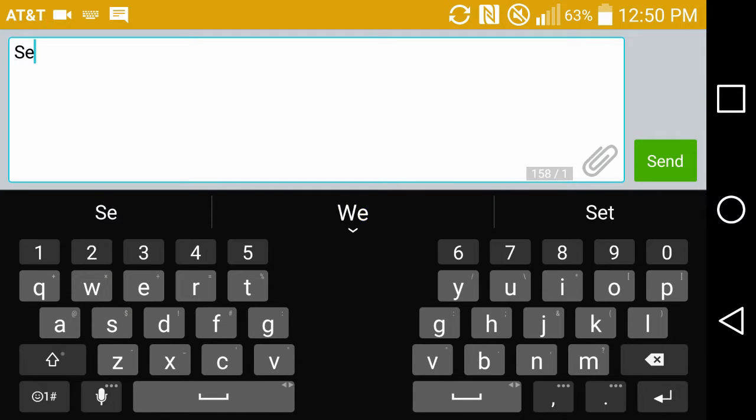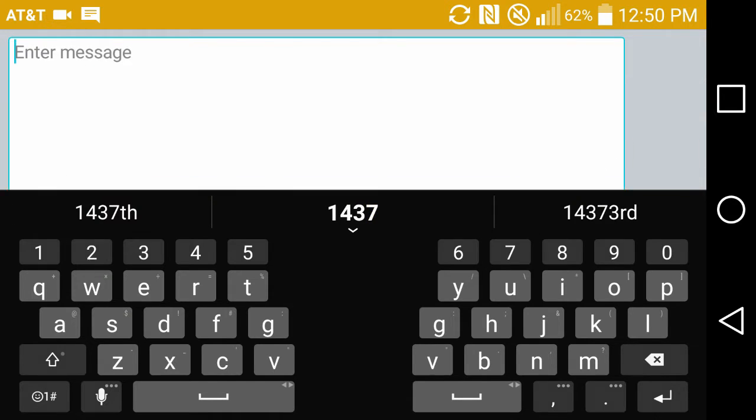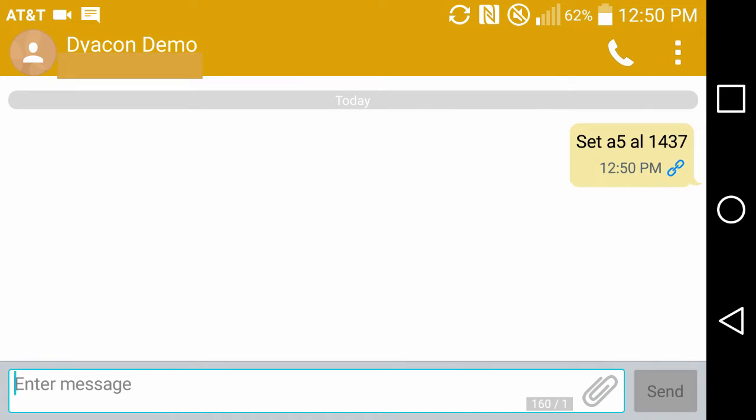Altitude is a parameter required by the weather station to compute the mean sea level equivalent. The value is entered in meters, so we enter set A5, AL to indicate an altitude setting, followed by the elevation of the weather station in meters.